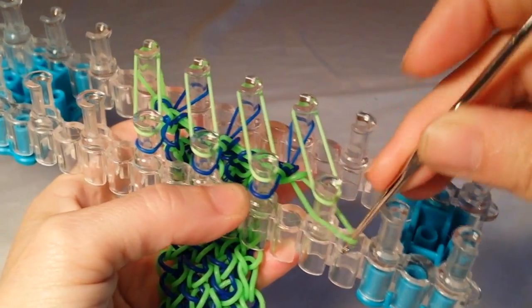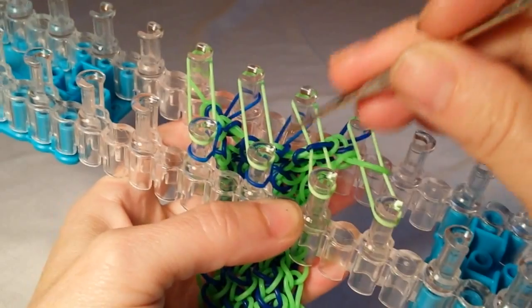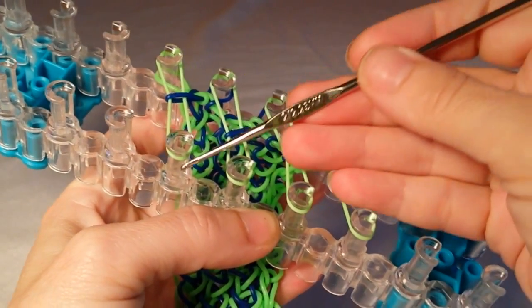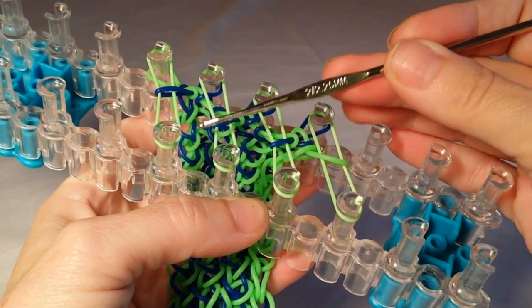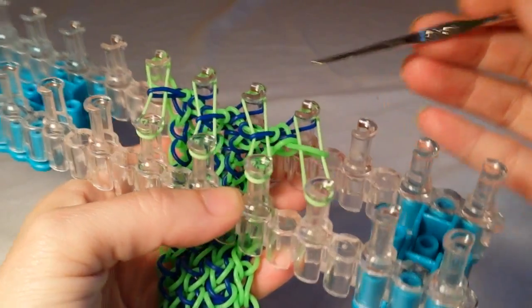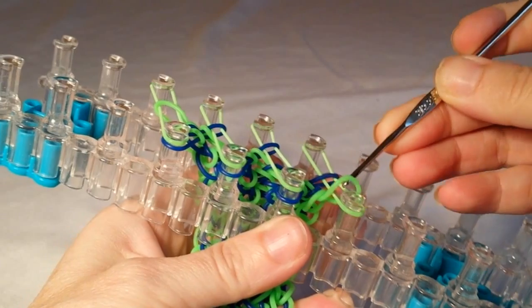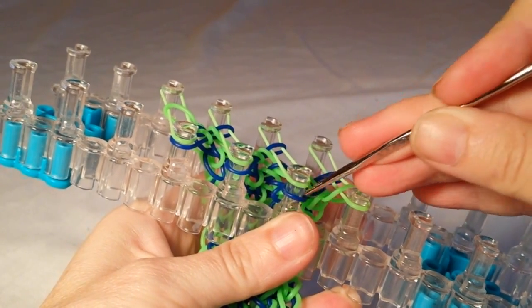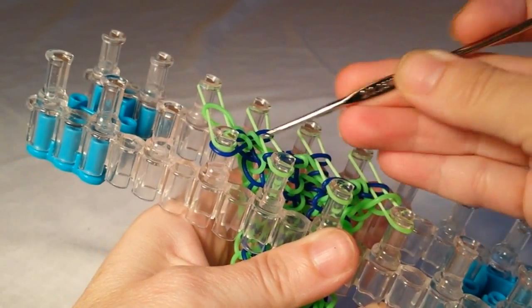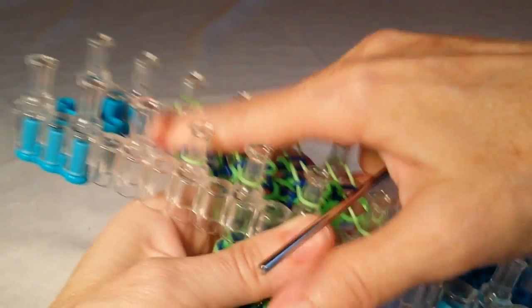I do have people ask me about the hook. This hook is a crochet hook, and you can get them at just about any craft store. The one I'm using right now is a 2.25mm. They come in all different sizes, and if you're interested in using one, you can just get the size that looks best for you. I use smaller ones when I do the designs on the forks and bigger ones when I do designs on the loom.